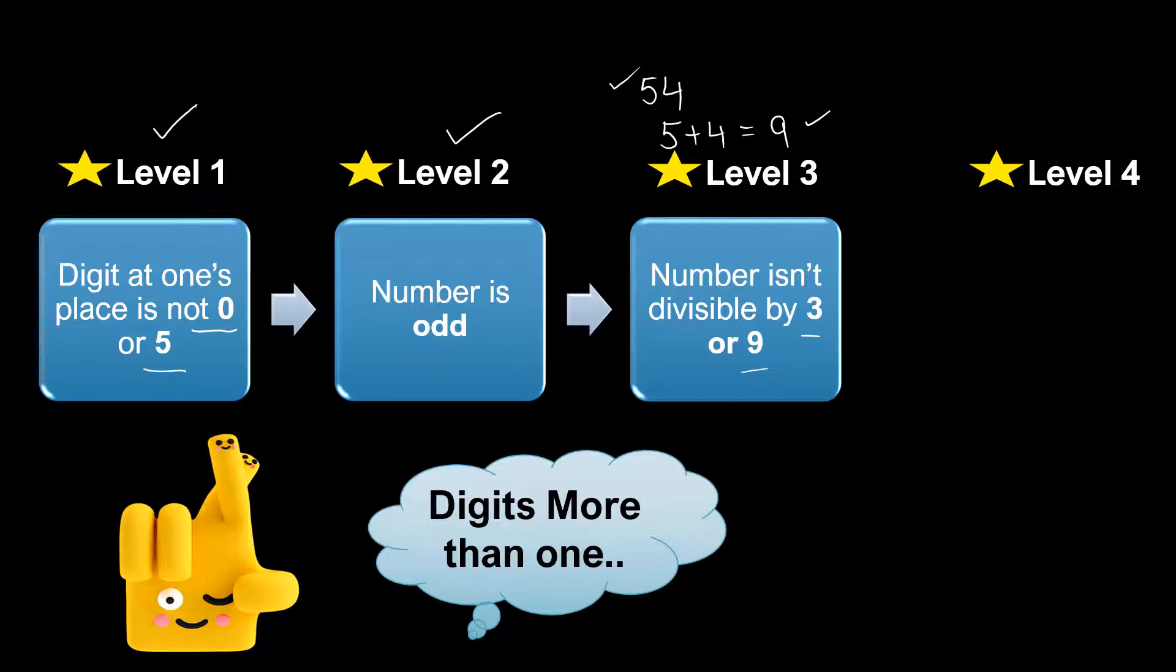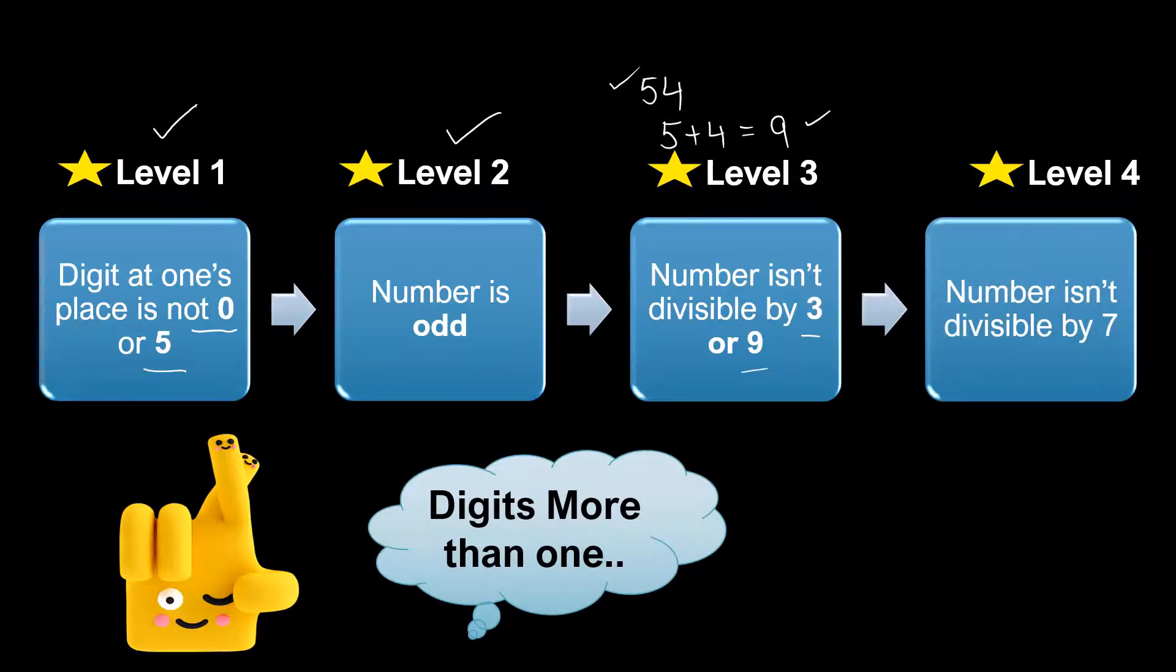In the next level, which is the final level of this game, the number should not be divisible by 7. For checking divisibility by 7, you can either do long division or check my video in which I have shared the divisibility rule by 7. The link is given in the description. If the number is not divisible by 7, it will clear the final level and become a prime number.